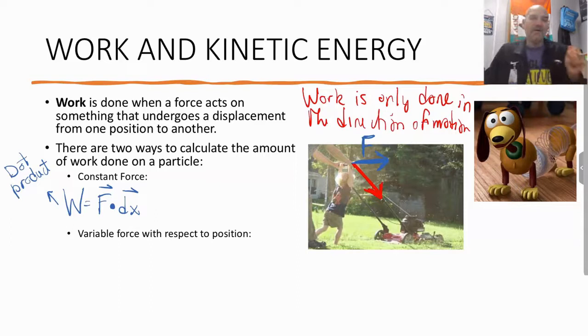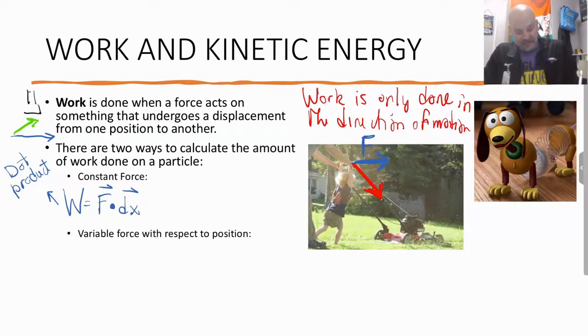A way to think about it is that one is a projection on the other. The way that you think about a dot product is if I had a flashlight shining up above this whole thing, what would be the projection or the length of the shadow of one on the other? This is my dot product.